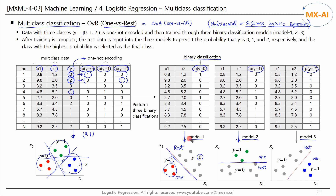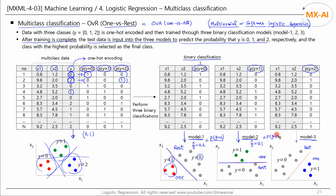These three models can be used to predict the target class of the test data. Once training is complete, test data points are fed into three models to predict the class probabilities. For example, the Y-hat from the first model is 0.2, meaning a 20% chance that Y is 0. The Y-hat from the second model is 0.1, meaning a 10% chance that Y is 1. Then, since Y is most likely 2, we predict the class of the test data point is 2. This is the multi-class classification method using OVR.